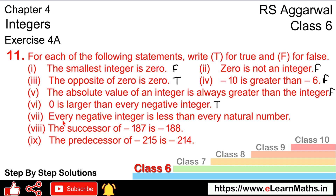Next part: every negative integer is less than every natural number. All negative integers are smaller than natural numbers, which are positive numbers. Negative numbers are always smaller than positive numbers. Yes, this is true.